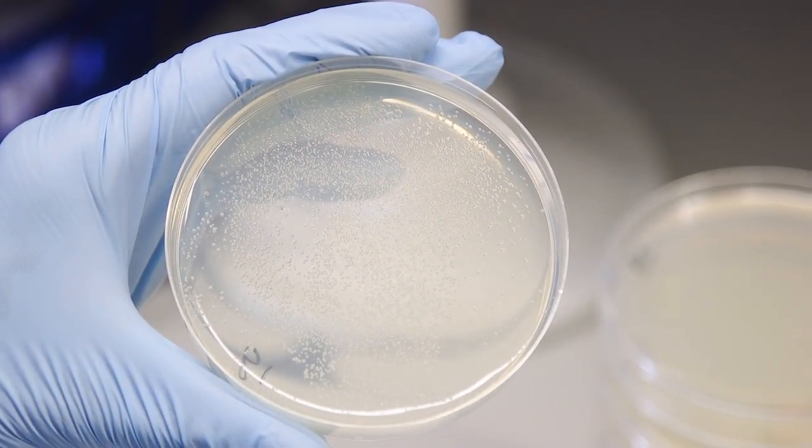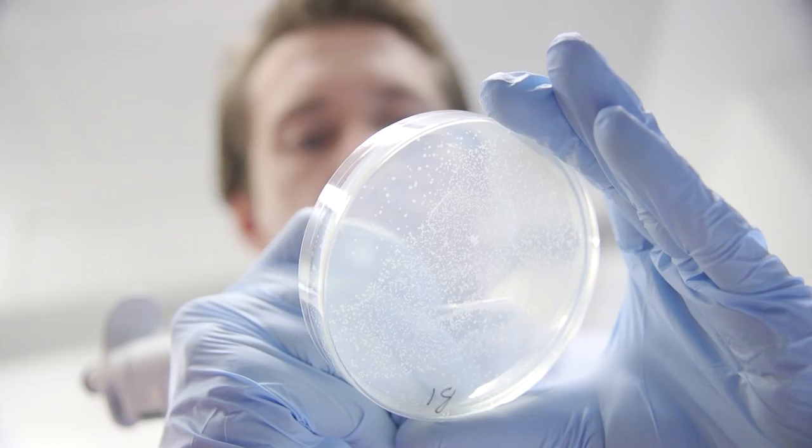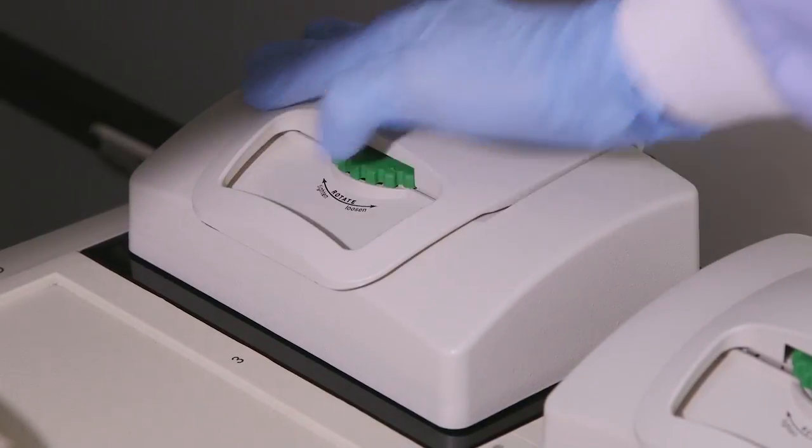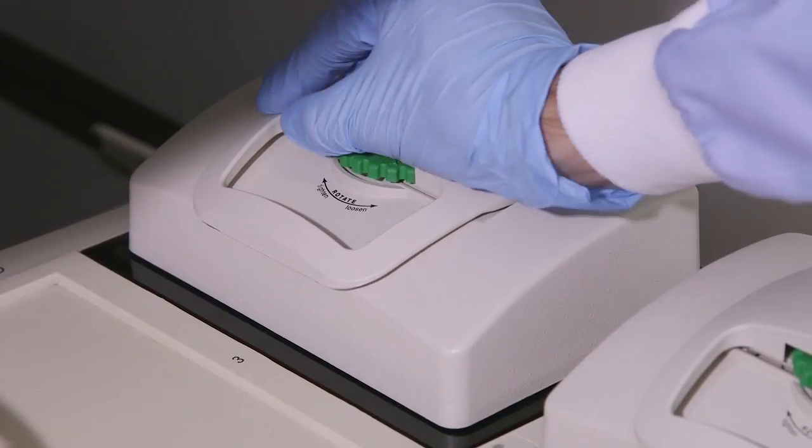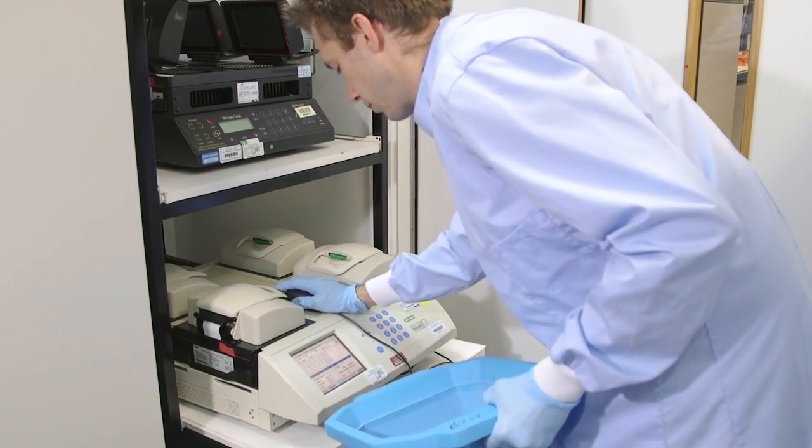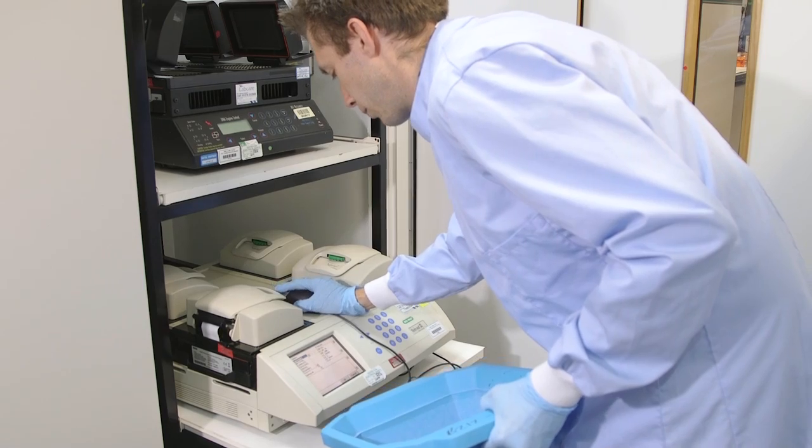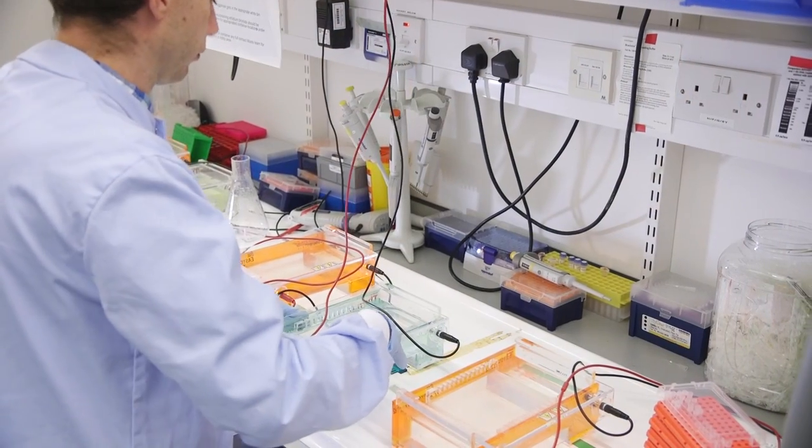Once the bacteria have grown on the plates, we pick the colonies and culture them overnight. As a first quality control step, we run another PCR reaction to confirm that the genomic fragment is correctly modified. We then run the products on a gel and record the results for our sample tracking database.